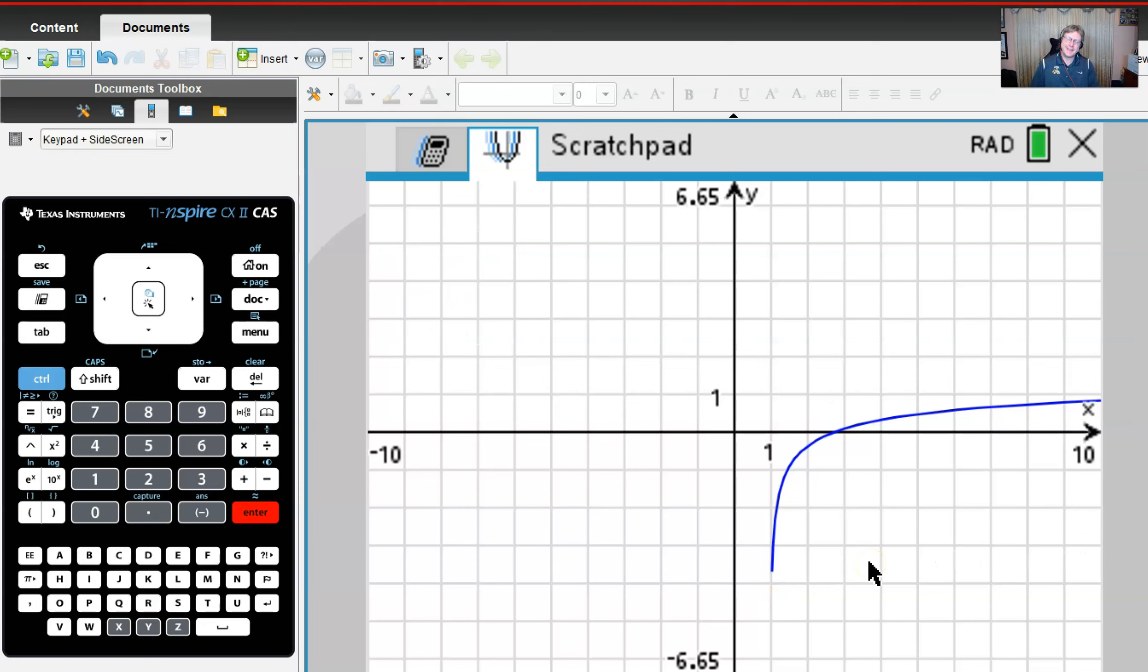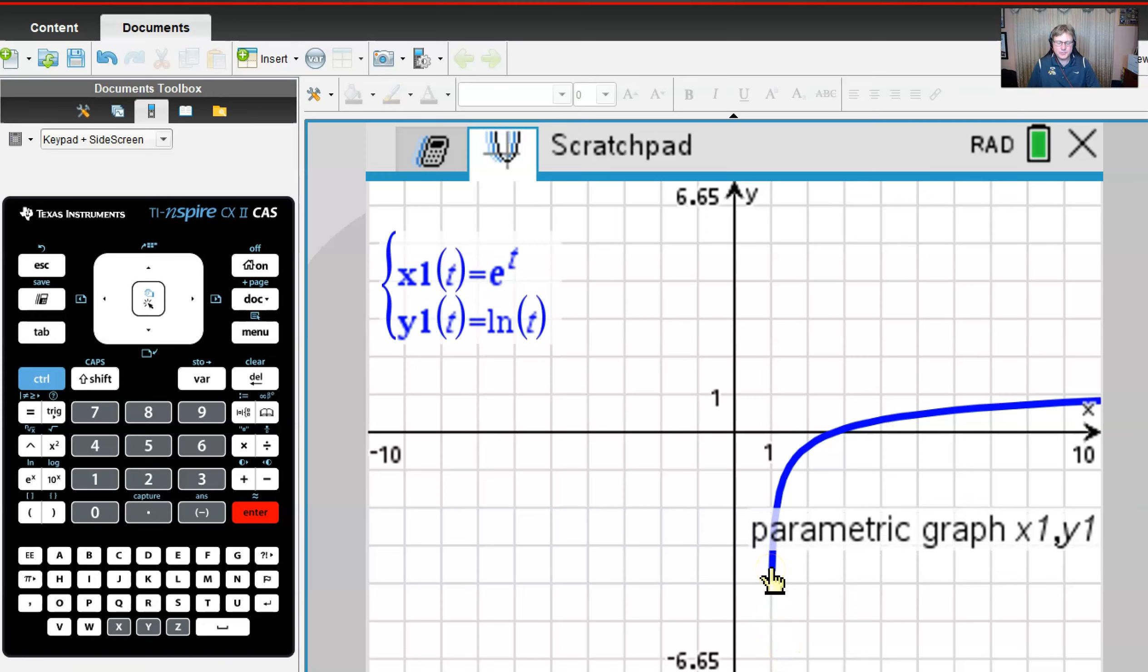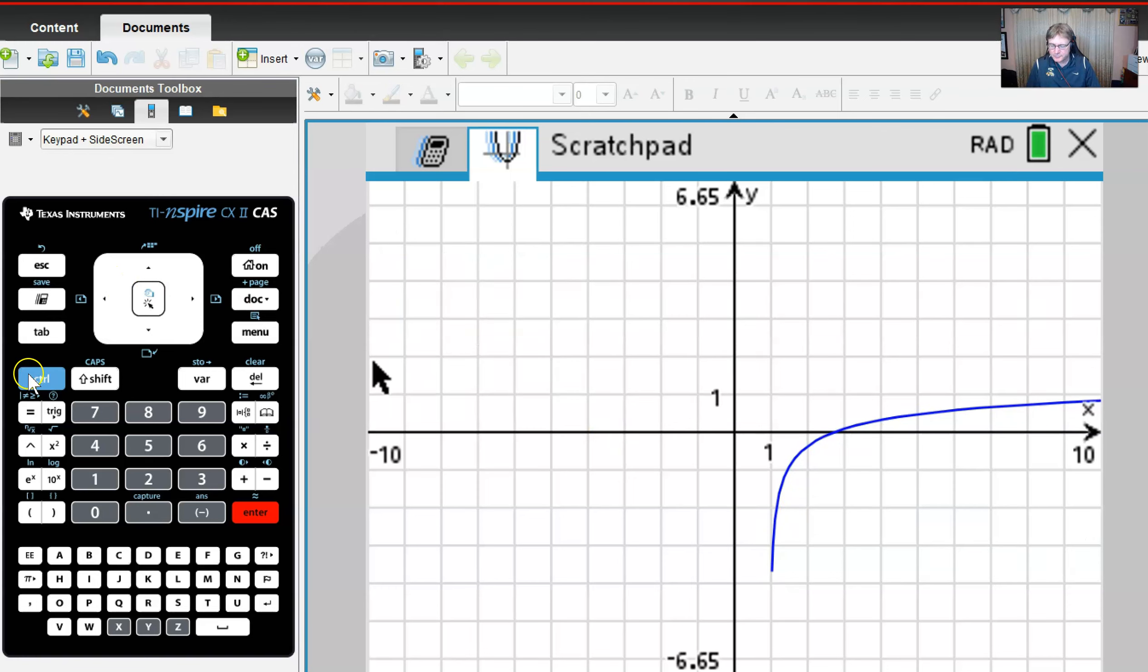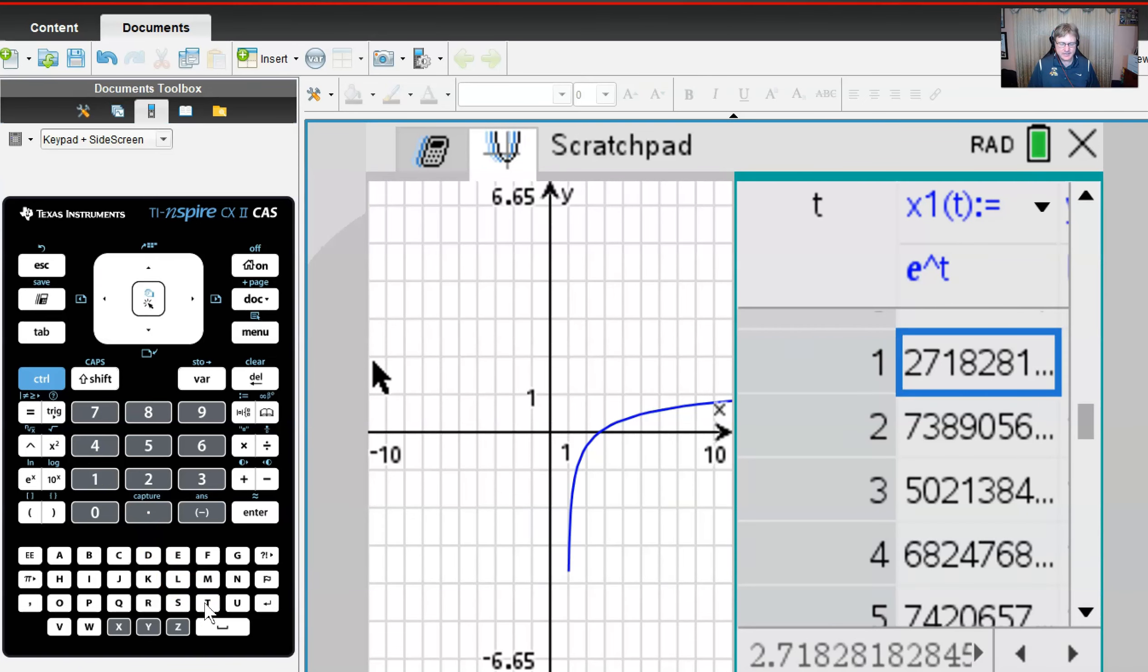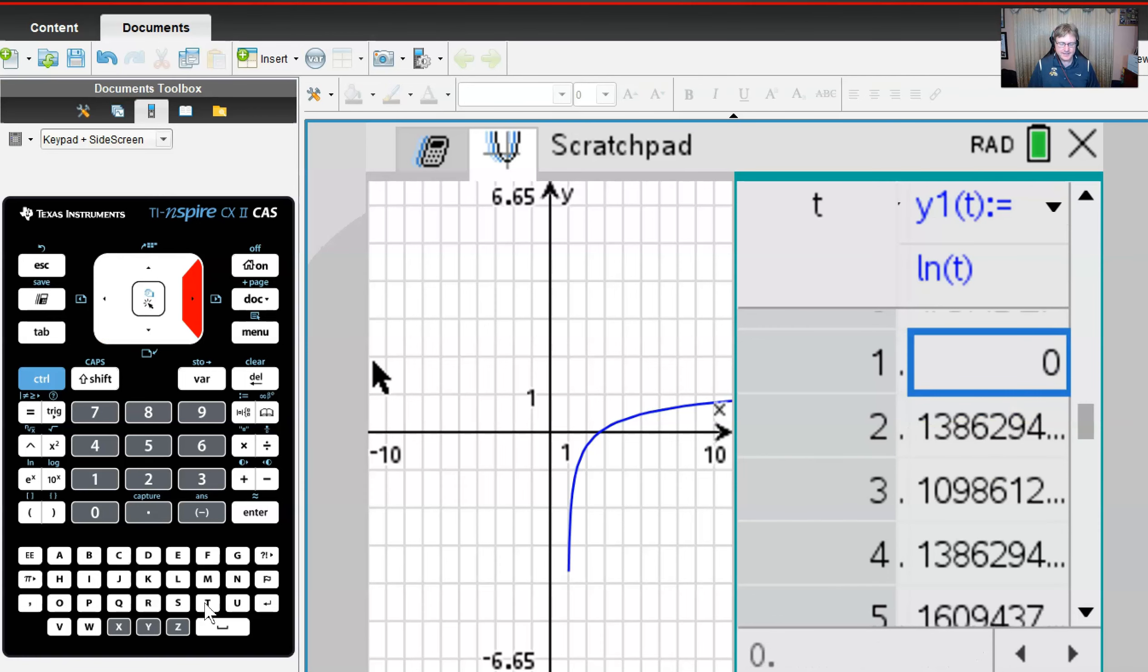There is something going on with this curve that we might intuitively have to figure out. One way we could do that is call up a table of values, which is just control t away on the TI Inspire. We can look at the value of our x and then we can see the values that we have for the y.